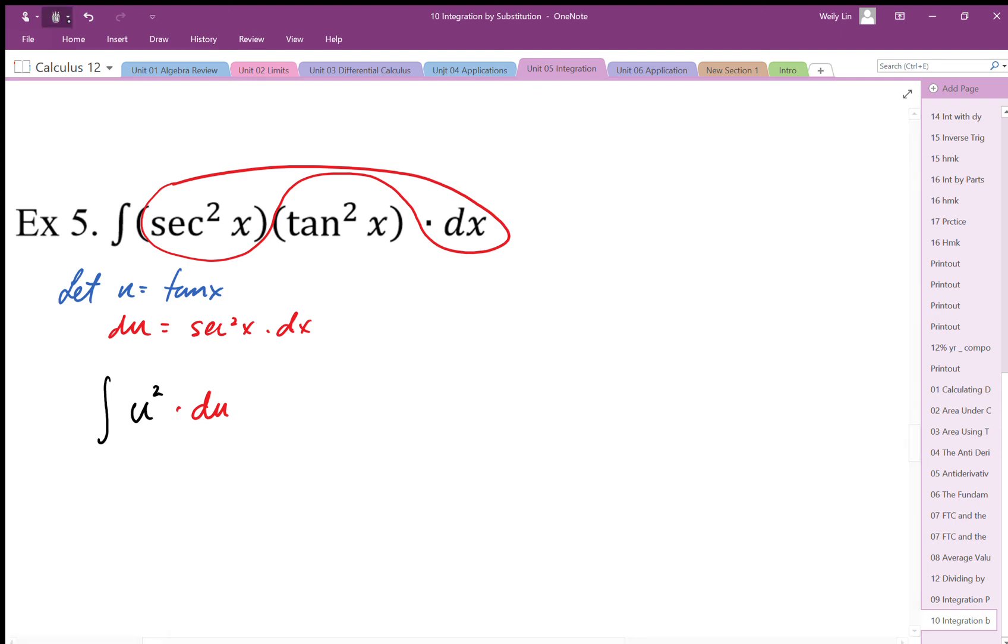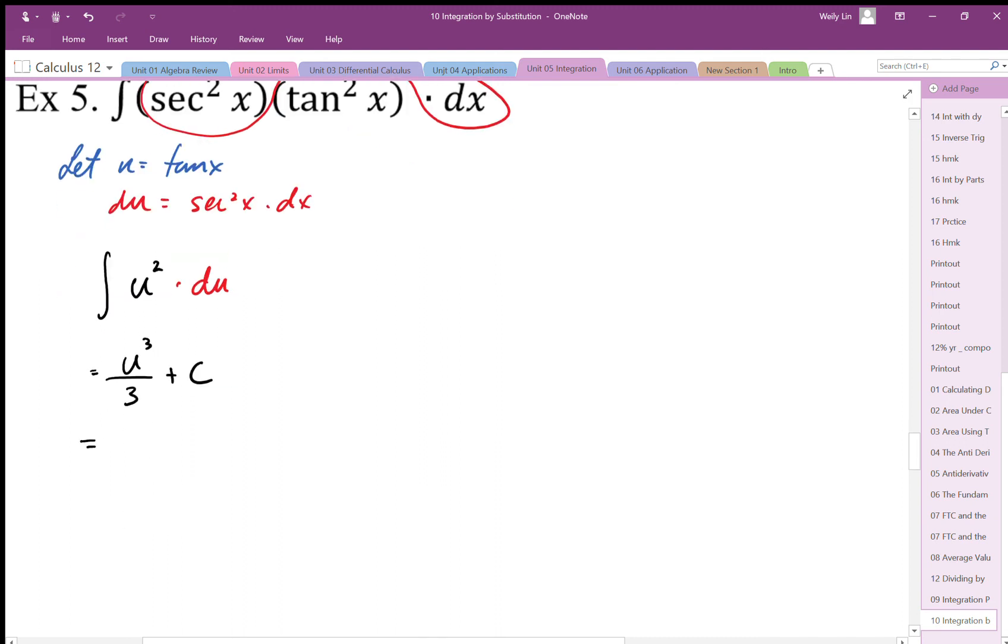u cubed over three plus c. Again I don't want to express this in terms of u, so I'm going to replace the u with my original substitution which was tan. There's my tan cubed x over three plus c. That seems to work, again I want to double check this.